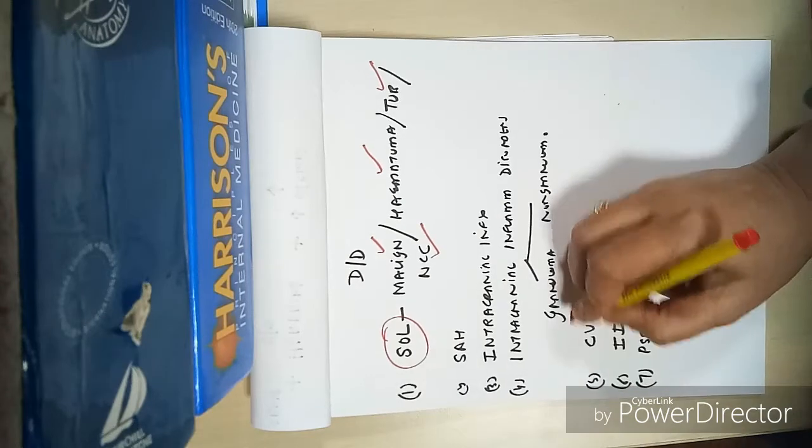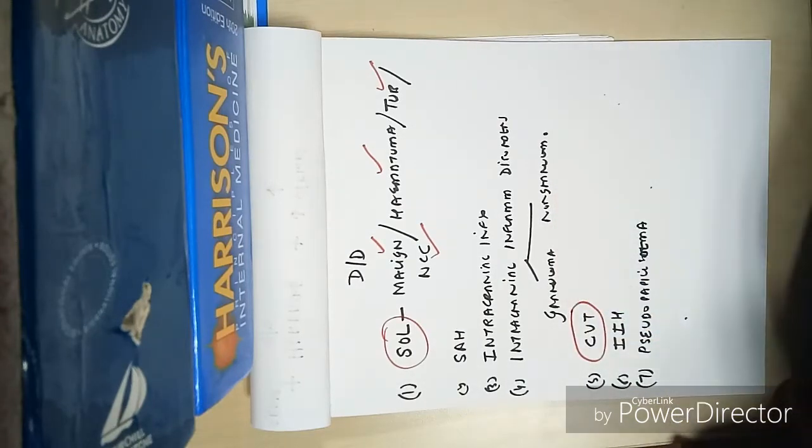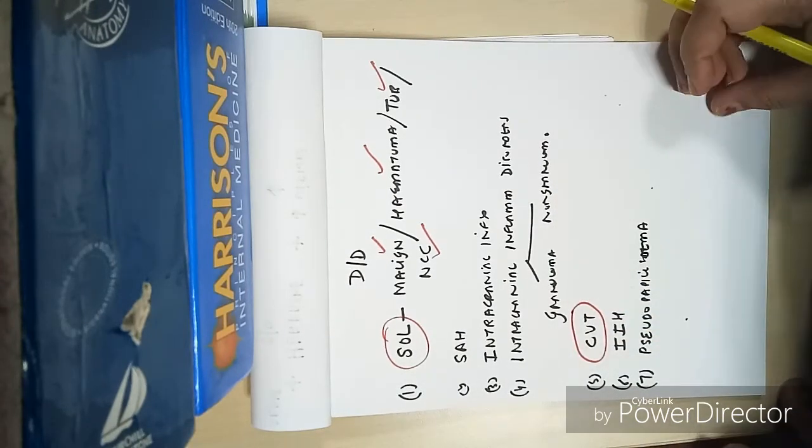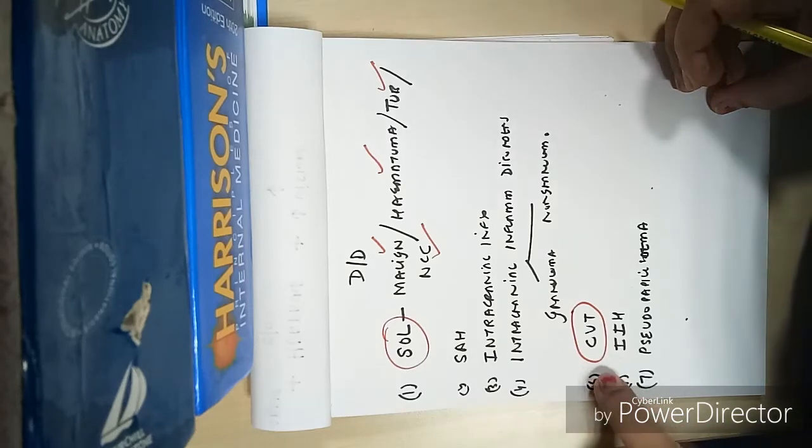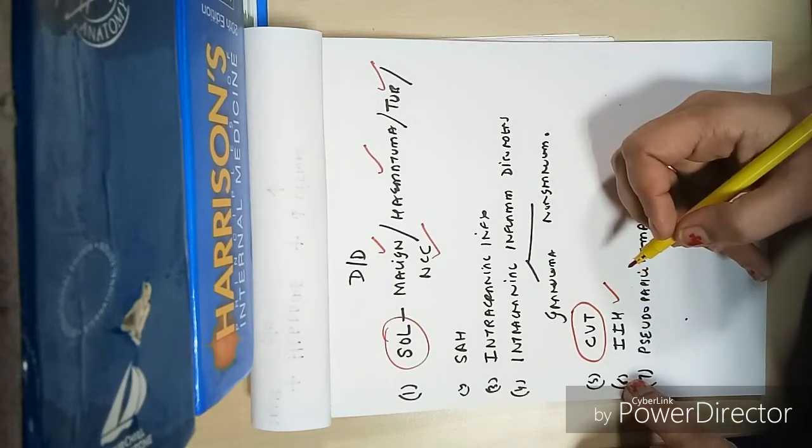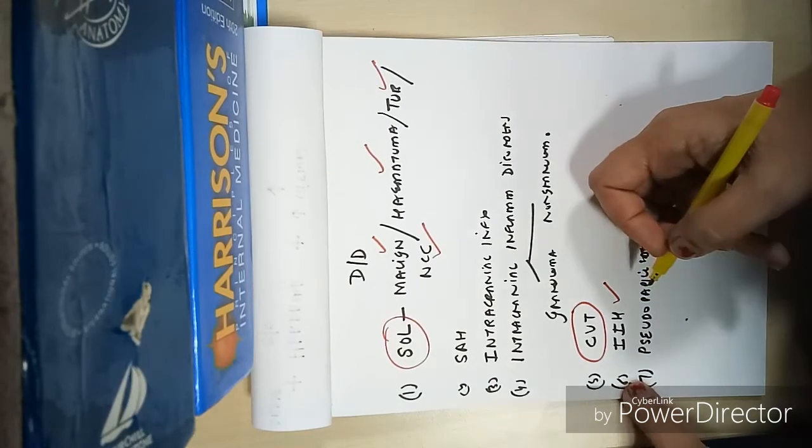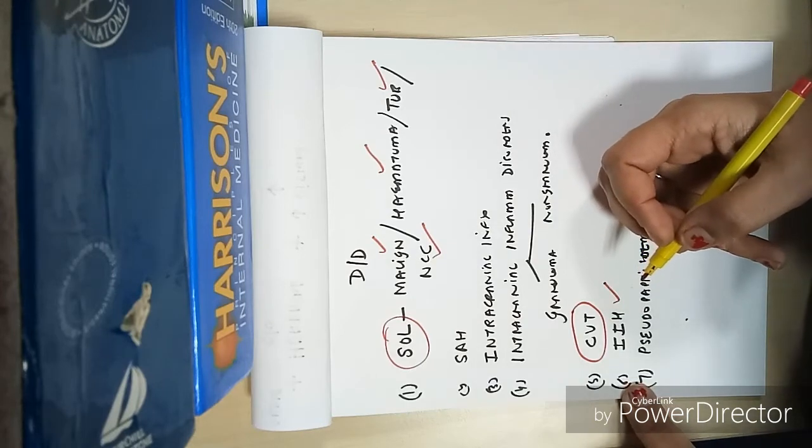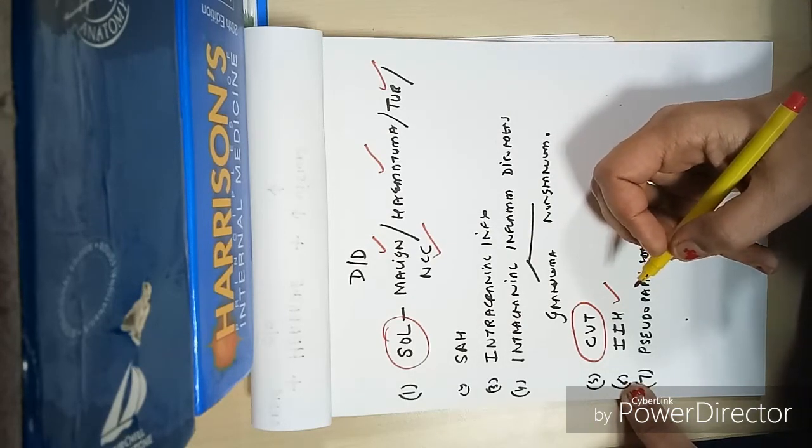Important differential in any young female is CVT, that is cortical venous thrombosis. Another important thing - because this patient was an obese female along with taking tretinoin - the possibility of idiopathic intracranial hypertension is very high.